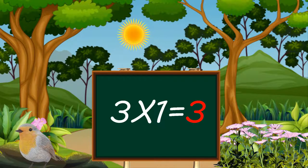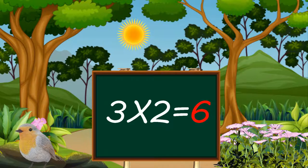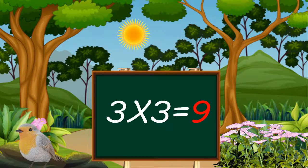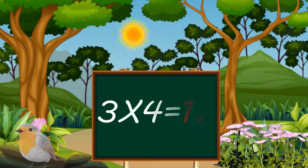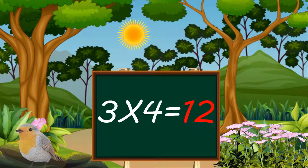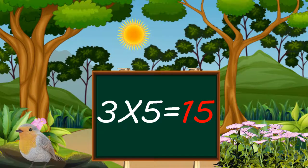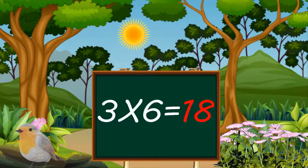Three ones are three. Three twos are six. Three threes are nine. Three fours are twelve. Three fives are fifteen. Three sixes are eighteen.